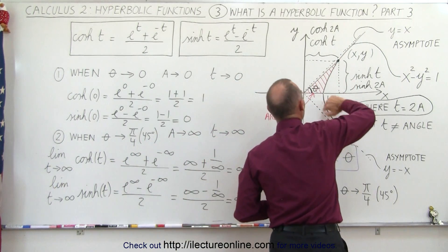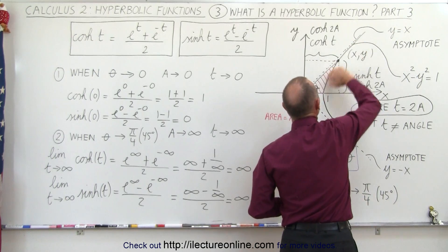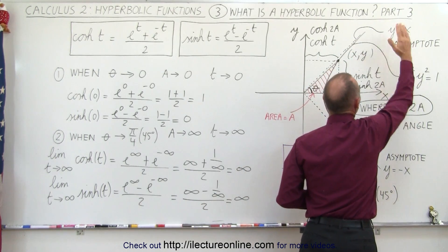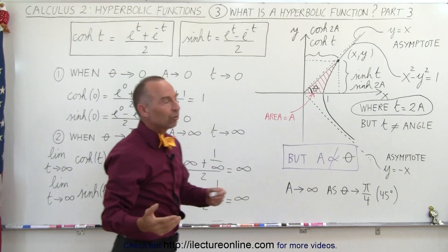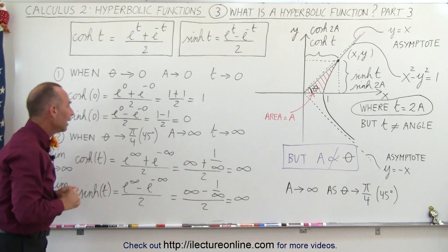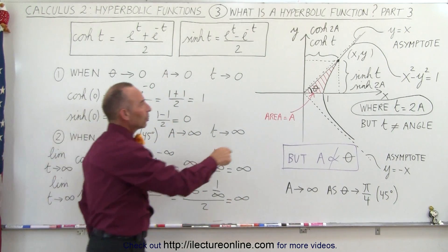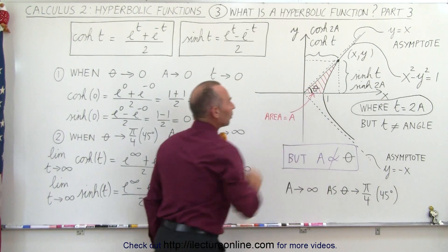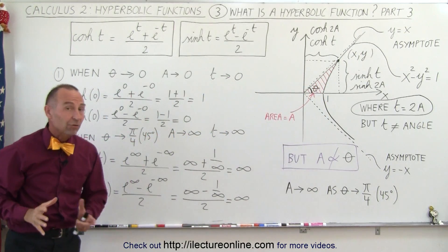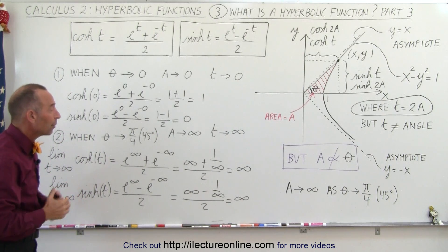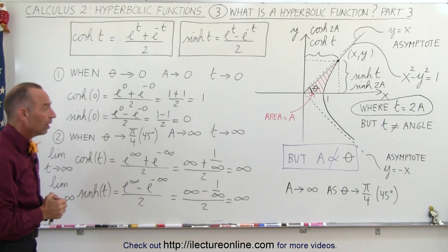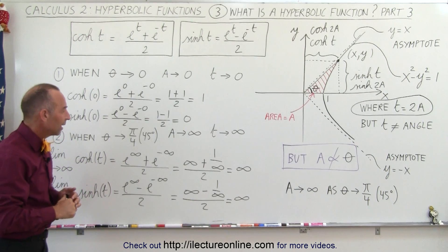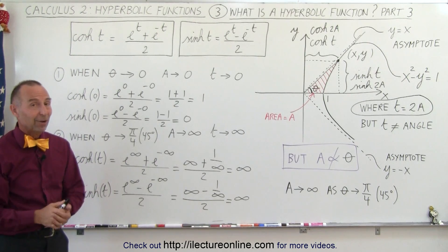In other words, this line representing the hyperbola goes on forever in the domain and the range. In the limit, those functions do go out to infinity. And in the other limit, when the angle goes to zero and the area goes to zero, x will be 1 and y will be 0. Hopefully that gives you a better feel for what those hyperbolic functions are. Later on, we'll also graph them to get a better grasp of what they represent. And that's how it's done.